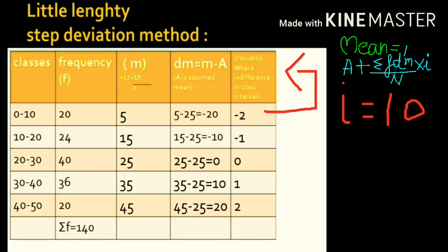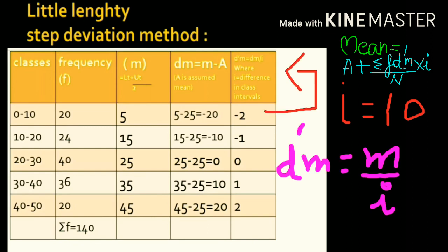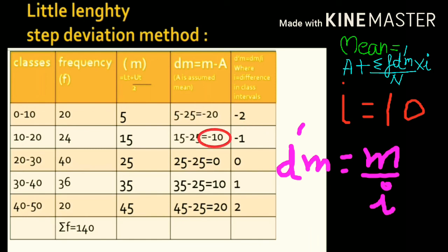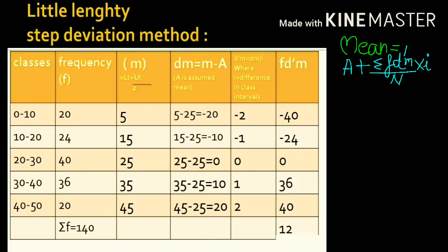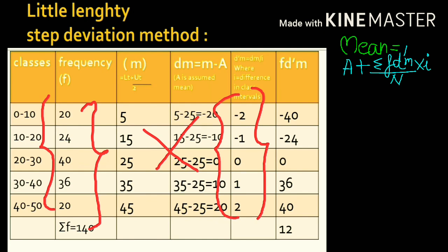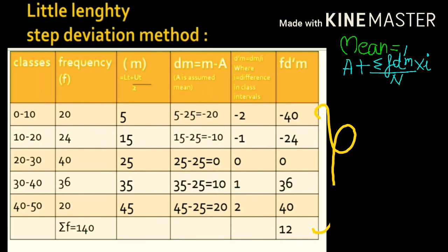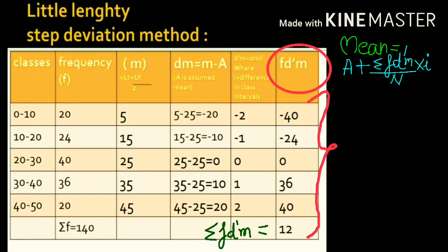For the first class, d'm equals dm upon i: minus 20 upon 10 equals minus 2. For the second class, minus 10 upon 10 equals minus 1, and we solve similarly for others. According to the formula we now need fd'm, so we multiply frequency with d'm. In the first class, 20 into minus 2 equals minus 40; in the second class, 24 into minus 1 equals minus 24, and so on. To obtain σfd'm we sum up the fd'm values: minus 40 plus minus 24 plus 0 plus 36 plus 40 equals 12.